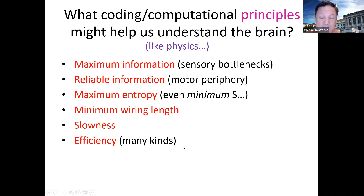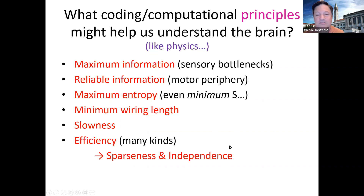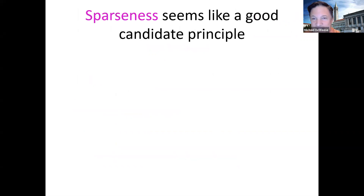Slowness: if I look at retinal neuron responses as I look around a room, the retinal image changes like crazy even though the objects aren't going anywhere. Slowness, done mathematically with some creativity, can actually be a really useful principle for figuring out coding schemes in the brain to extract useful signals out of quickly varying inputs. And then there's efficiency — we're going to focus on sparseness and independence, which are related to efficiency in this talk.